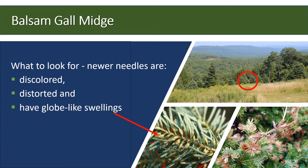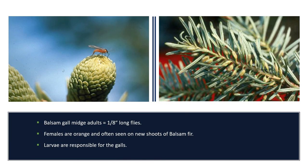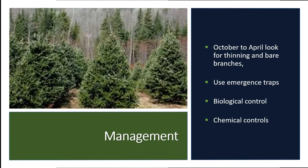The gall can be seen from June into October. Balsam gall midge adults are small, one-eighth inch long flies. The females are orange and often seen on new shoots of balsam fir. They lay eggs under the scales of these new shoots or between the needles. The larvae, which is the stage responsible for creating the galls, are yellow, orange, or pink, and will remain in the galls until they fall to the ground in the autumn. They overwinter in the leaf litter and pupate in the spring to start the cycle again.